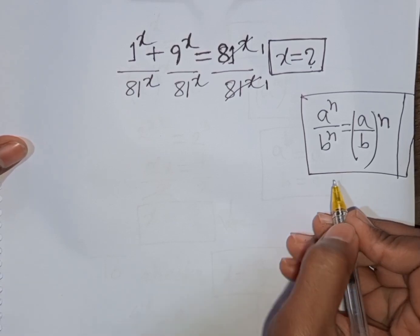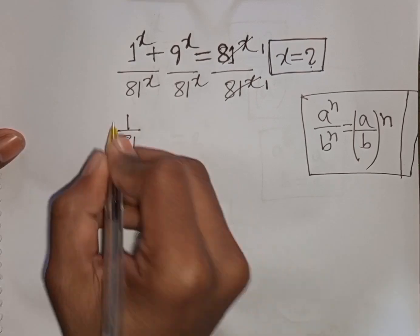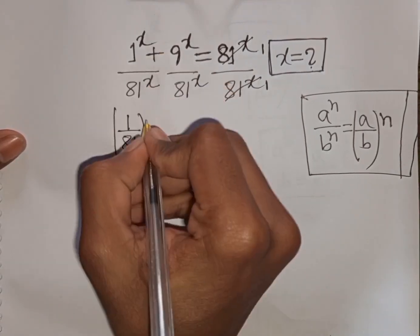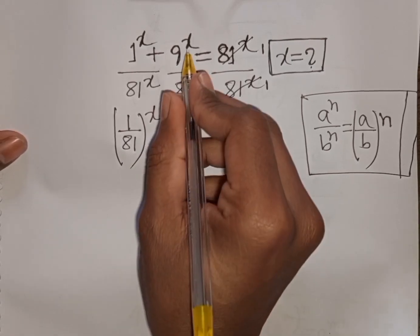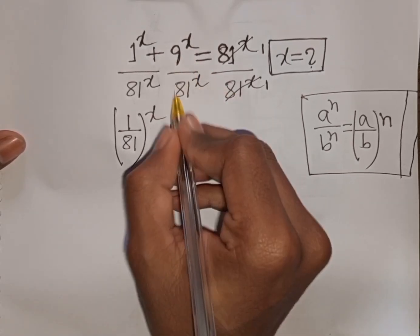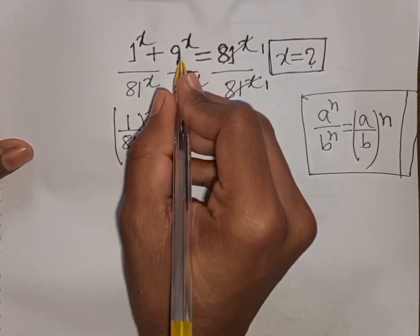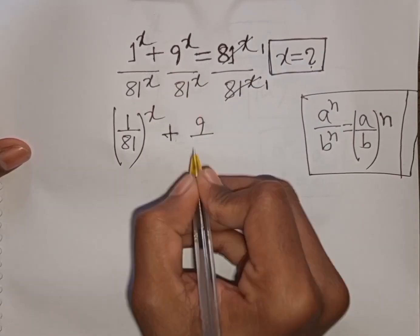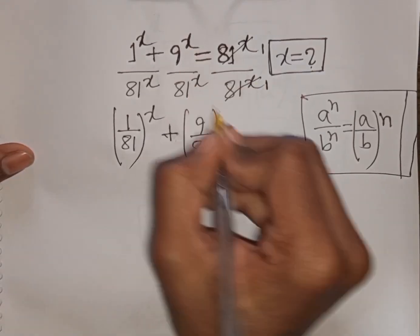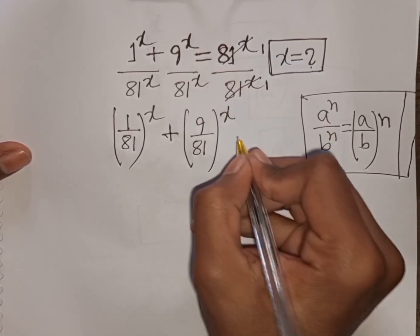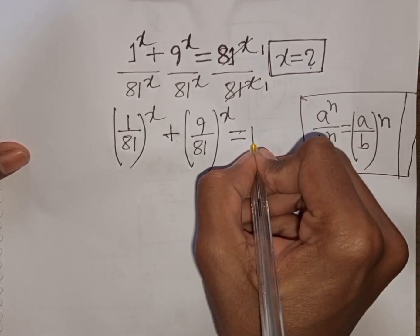Applying this formula, we can write (1/81)^x + (9/81)^x = 1/1, that means it will be 1.